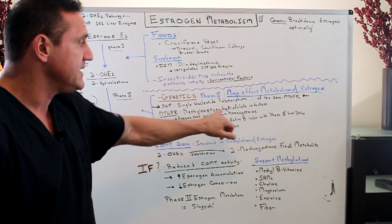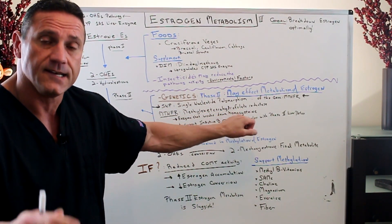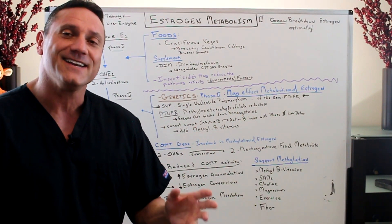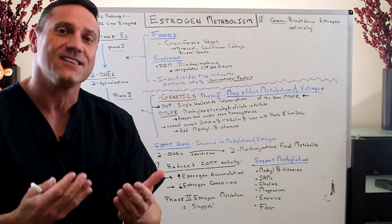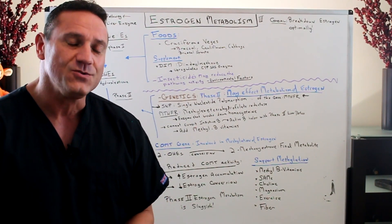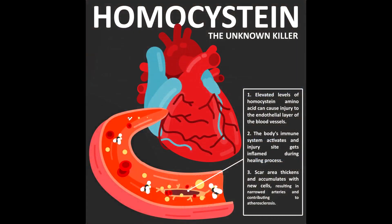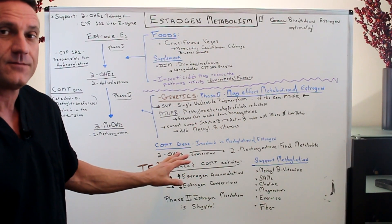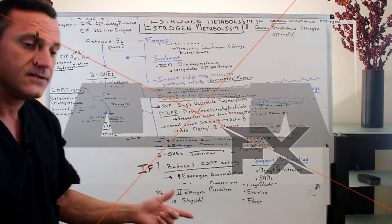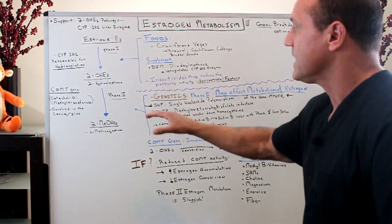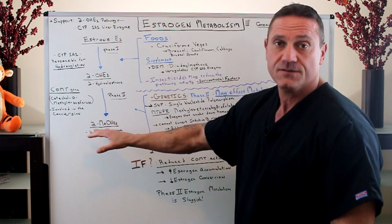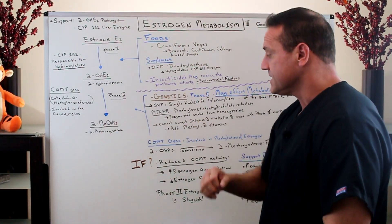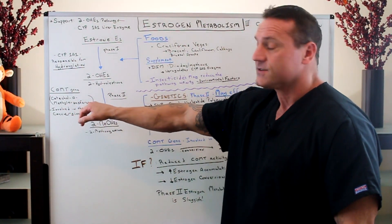You're going to ask yourself: what's the big deal with homocysteine? If you're not breaking down homocysteine and it elevates in the system, that's a huge indicator for heart disease and cardiovascular risk. This is why this is important. Now, we have another gene involved with the conversion of 2-hydroxyl estrone to 2-methoxy estrone, and that's catechol-O-methyltransferase.